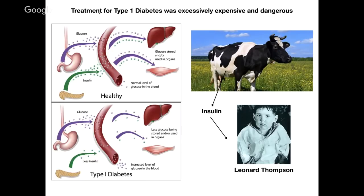Prior to the 1960s, diabetes treatment was extremely expensive, even more so than it is today, although today it's still an expensive therapy. But different from today, it was also very dangerous. Type 1 diabetes occurs when you don't have enough insulin in your blood. The way that this was treated was that insulin was harvested from fetal calves to be injected into humans to allow them to live just a few more years than they would have been expected to. If you inject cow proteins into humans, you can often have massive allergic reactions. And Leonard Thompson, seen down here in the corner of the slide, was one of the first people to be injected with bovine insulin and suffered severe allergic reactions.